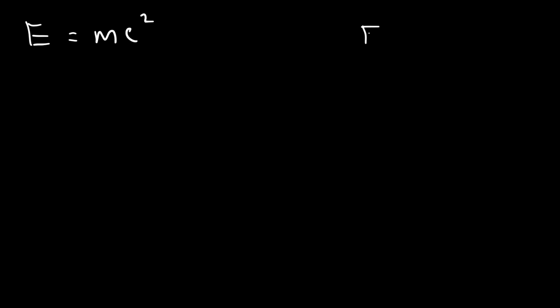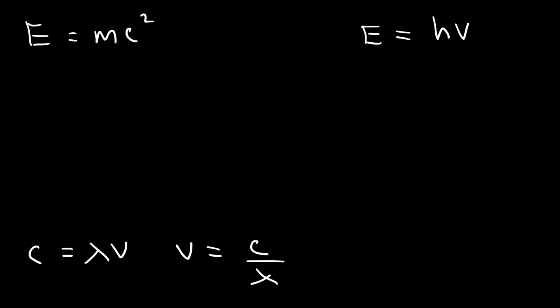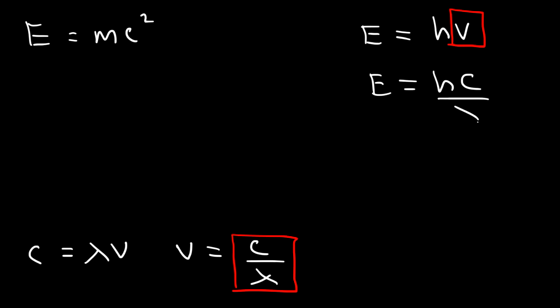Now let's talk about one way to derive the de Broglie wavelength equation. According to Einstein, energy equals mc squared. The energy of a photon is Planck's constant times frequency, and the speed of light equals wavelength times frequency, so frequency is c divided by lambda. Replacing frequency with that term gives energy equal to Planck's constant times c divided by wavelength.